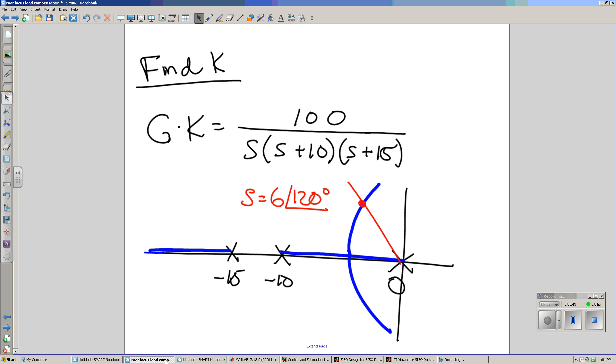At that point, just like any point on the root locus, find k so that g times k is minus 1.